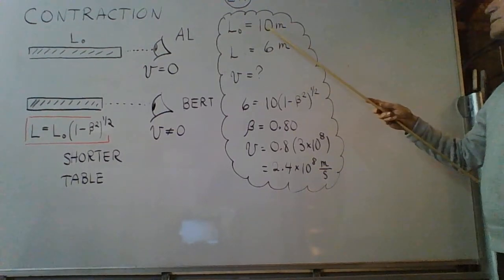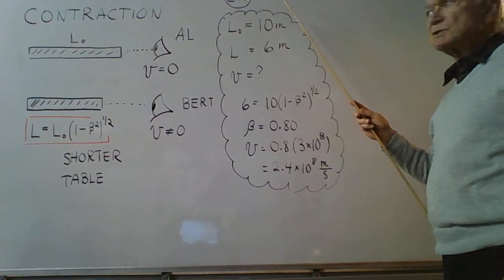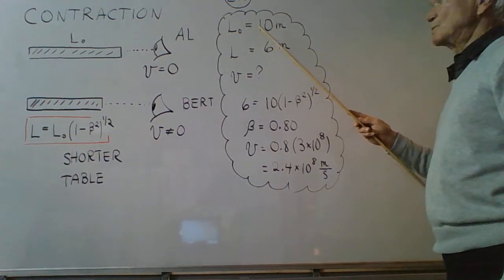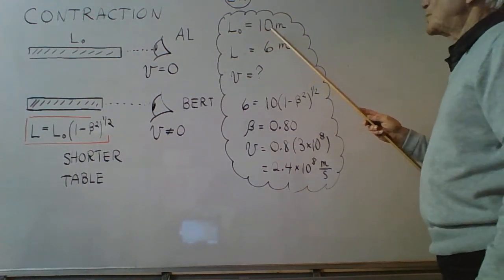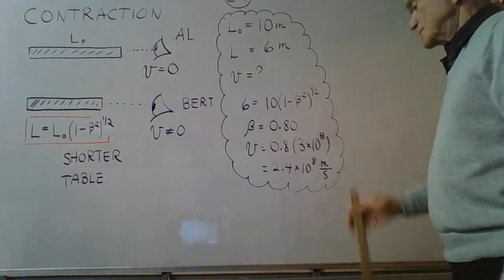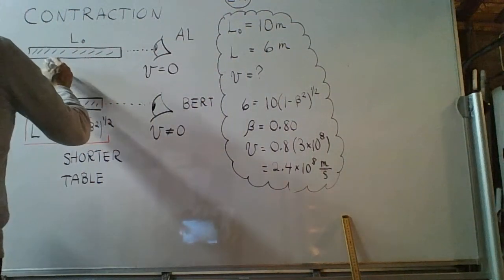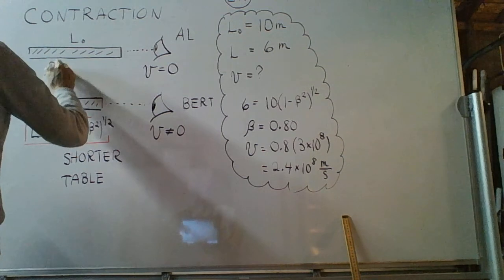Suppose an observer who is at rest relative to some object measures what we call the proper length of 10 meters. Let's go back and record that Al observes the proper length.